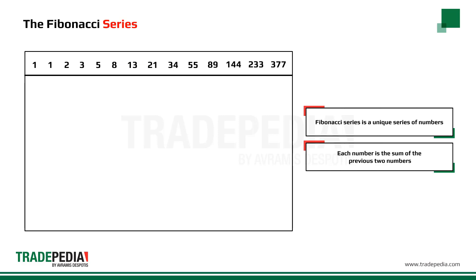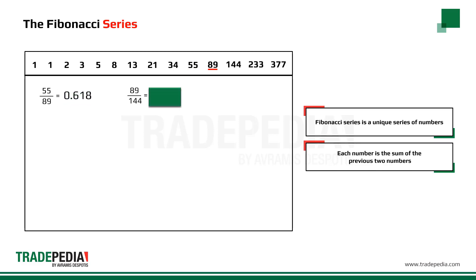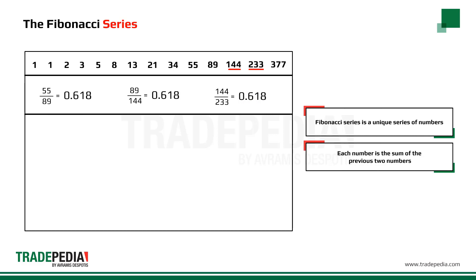The next thing we notice is that if we divide any two numbers next to each other, we find that they are connected through the same ratio. 55 divided by 89 is equal to 0.618. 89 divided by 144 is 0.618. And 144 divided by 233 is 0.618. The same for 233 divided by 377.